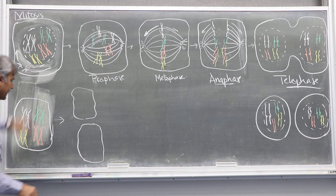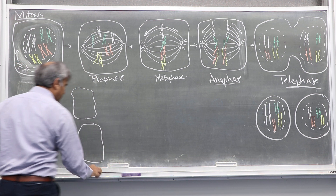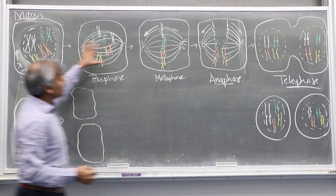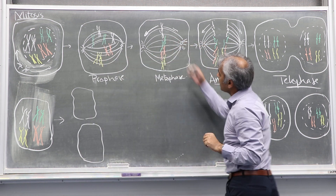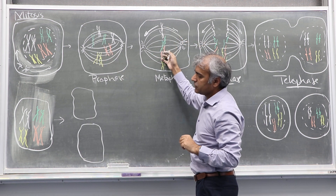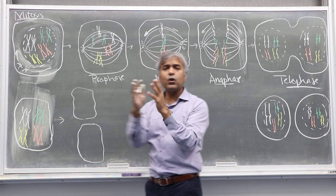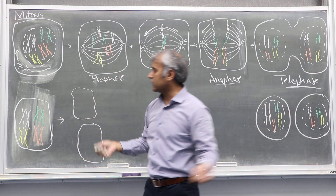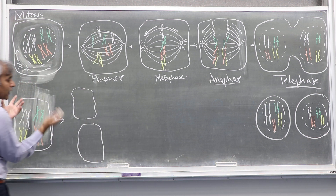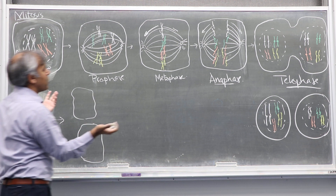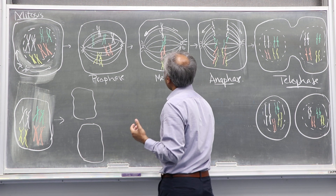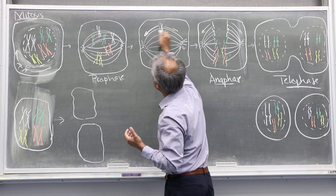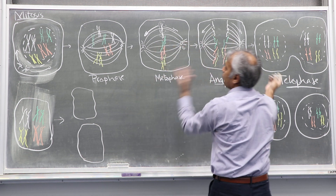These are sister chromatids, just like before. In meiosis I, what happens after chromosomes come onto the mid-equatorial plate is that there is no separation of the sister chromatids. Rather, what happens is the homologs move to opposite poles. In meiosis, this complete pair will move to one side and this will move to the other side.